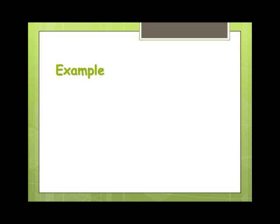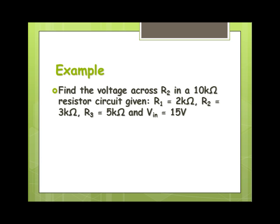So let's work through an example. The goal is to find V_out — the voltage across the 3 kilo-ohm resistor, R2. The information given is: total system resistance is 10 kilo-ohms, R1 = 2 kΩ, R2 = 3 kΩ, R3 = 5 kΩ, and V_in = 15 volts.